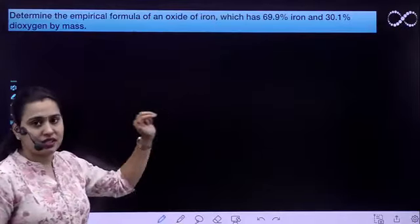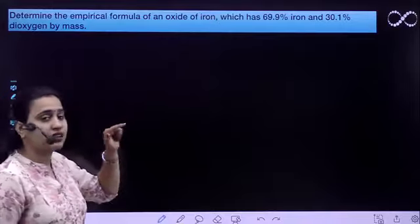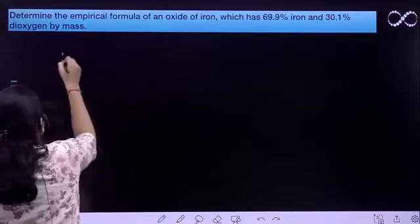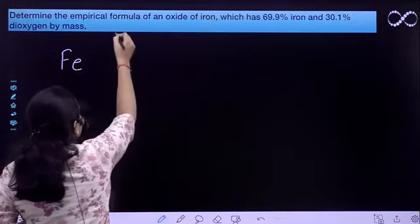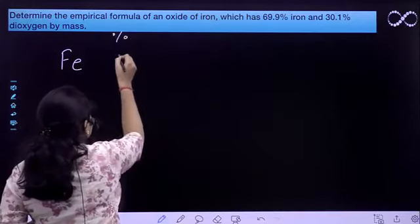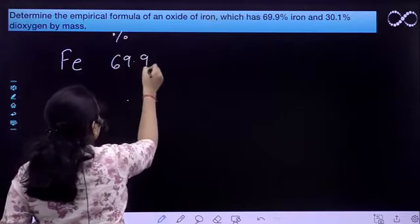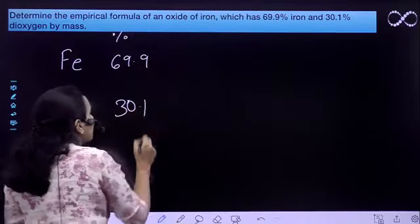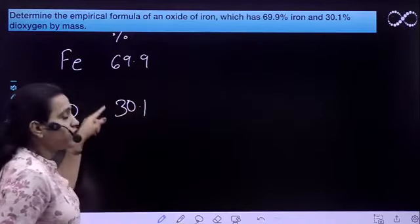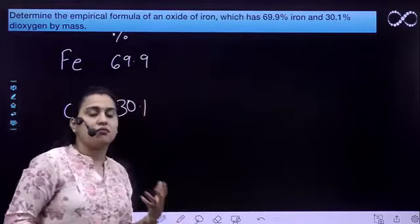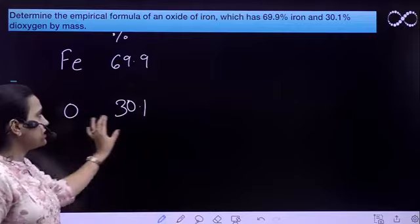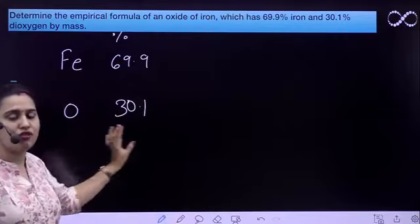Aapko dono ka hi percentage abundance de rakha hai iron ka aur oxygen ka. What we will do is, firstly we will write the elements here. Then their percentage abundance here, iska hai 69.9 and oxygen is 30.1. The question states, it is di-oxygen by mass, yaani ke O2. Ya, aap oxygen ka mass le raha hai. Iske andar basically it is the percentage abundance of oxygen.